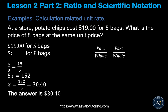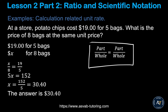At a store, potato chips cost $19 for five bags. What is the price of eight bags at the same unit price? Use the part over whole equals part over whole formula. Write: x over 8 equals 19 over 5, keeping dollar amounts consistent on the same side. You can see the dollar sign is on the right side and left side, with bag counts on the bottom.